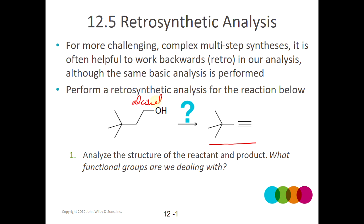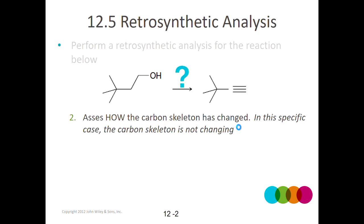Here we're dealing with an alcohol and an alkyne. Alcohols are very common with tons of different reactions, so it's hard to know where to start. Alkynes are fairly common as well, but we had a short chapter at the end of last semester dealing with alkynes, and we know there are only a few different ways to make them. First, I want to look at the carbon skeleton to see whether it's changing.